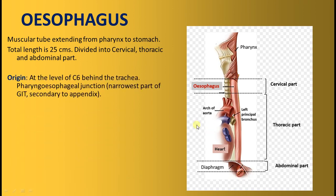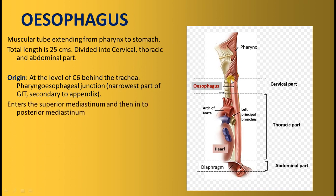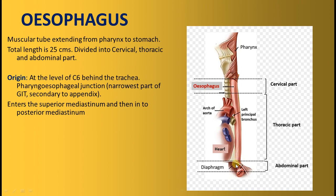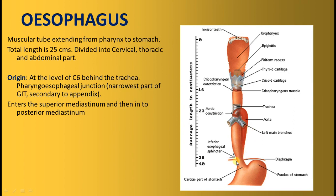The pharyngoesophageal junction at C6 is called the second narrowest part of the gastrointestinal tract — the first and most narrow being the appendix. This C6 level is also the starting point of the trachea: the larynx continues as the trachea, and the pharynx continues as the esophagus at C6. The esophagus enters the superior mediastinum and continues into the posterior mediastinum, piercing the diaphragm at T10.